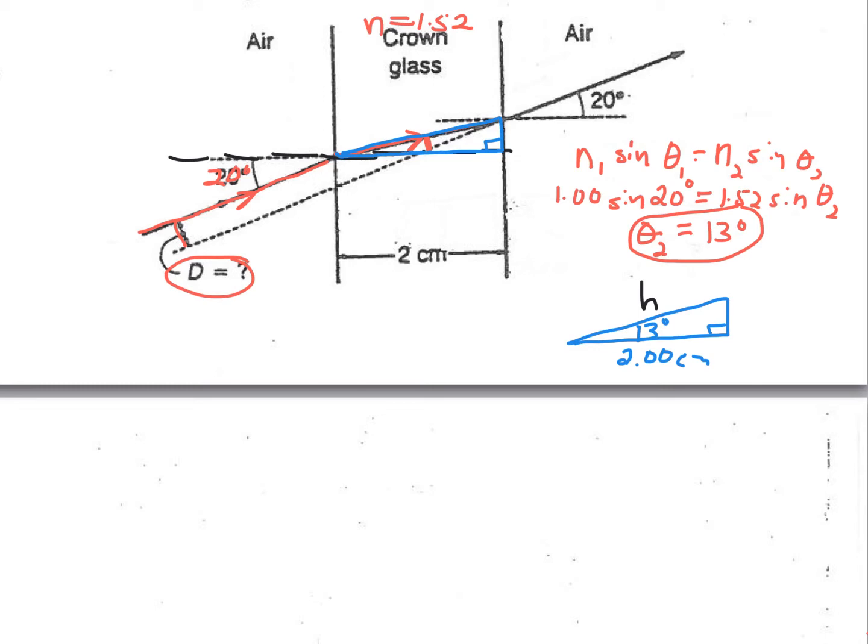So right now to find H, well trigonometry, right triangle geometry, use the cosine of 13 degrees equals the 2.00 over H. You solve for H, H comes out to be 2.05 centimeters, right? It's an important number, or a useful number, as far as finishing off this problem.